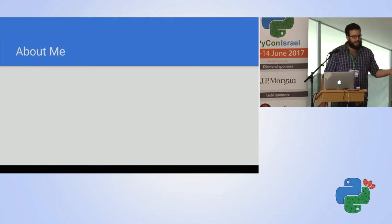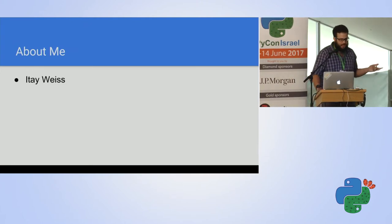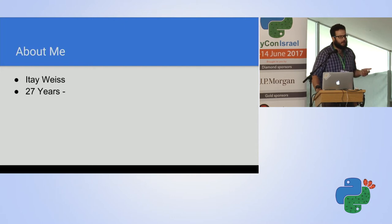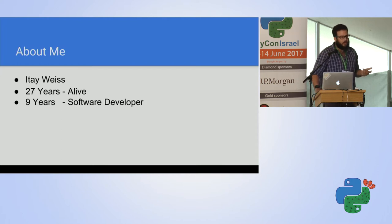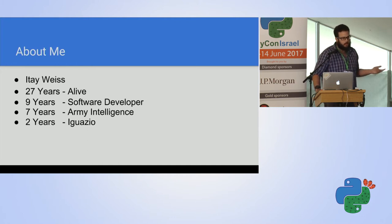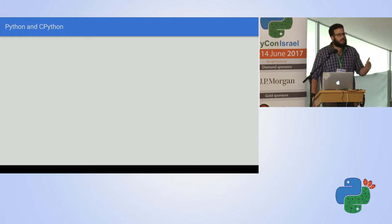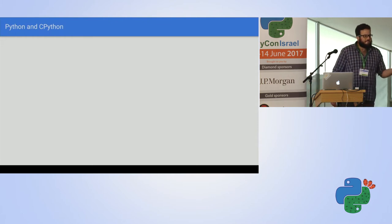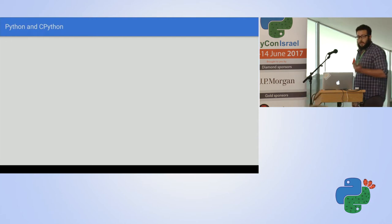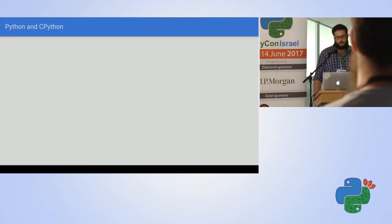A little bit about myself - my name is Ty. For the past 27 years I've been alive, nine years of that I've been writing code - seven years in the army, two years at a software company named Iguazio. I'm here to discuss a very painful subject: performance.